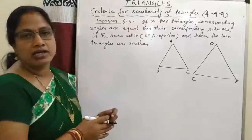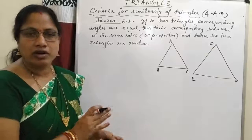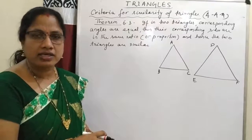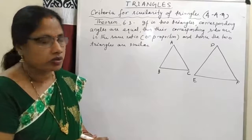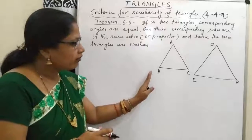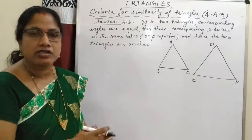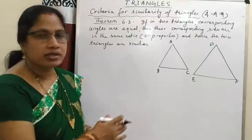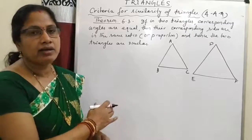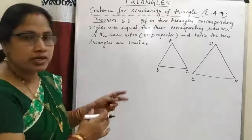Previously in our last class, we know that two triangles are similar if the corresponding angles are equal and the corresponding sides are in equal ratio or equal proportion. But here, we have to prove that if the three angles of a triangle are equal to the corresponding three angles of another triangle, then these two triangles are similar and their sides are in the same proportion. So, let us prove this theorem.